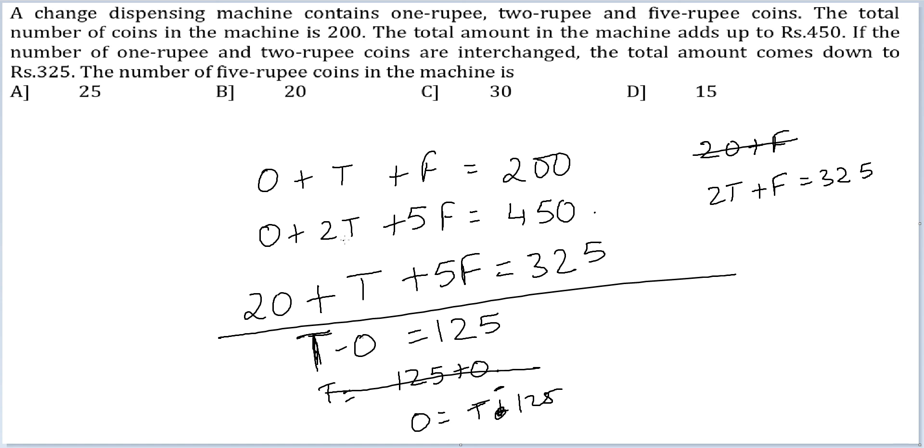Substituting, 3T plus 5F equals 575. From 2T plus F equals 325, multiplying by 3, we get 6T plus 3F equals 975.